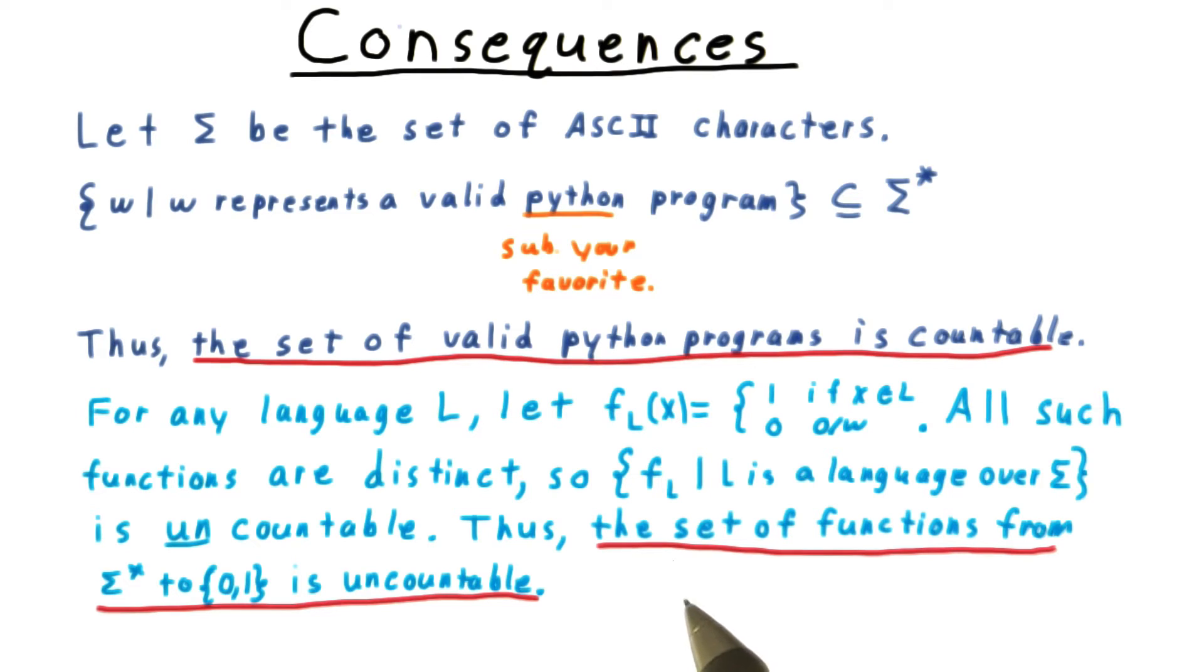Here's the profound point. Since the set of valid Python programs is countable, but the set of functions is not, it follows that there must be some functions that we just can't write computer programs for. In fact, there are uncountably many of them.